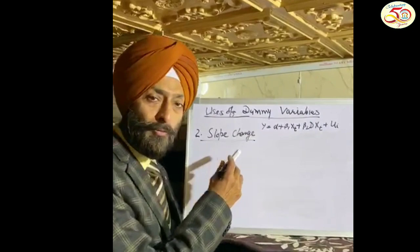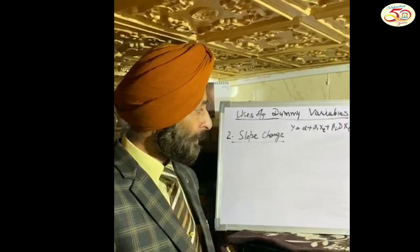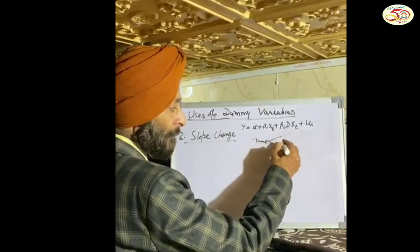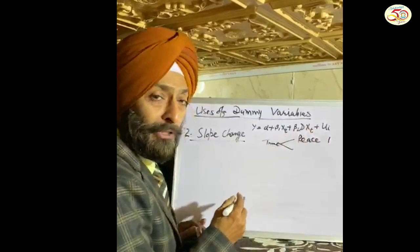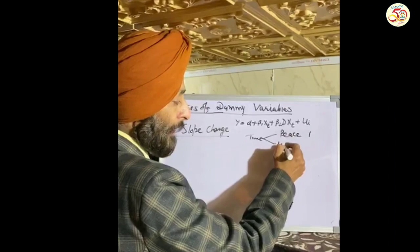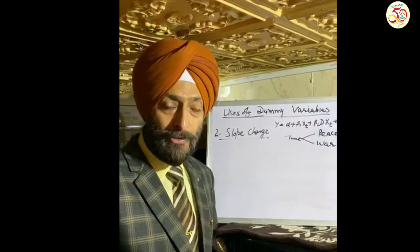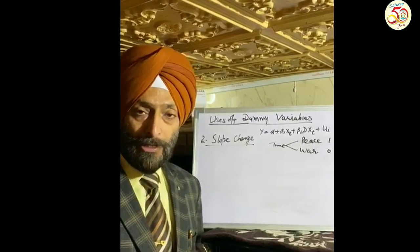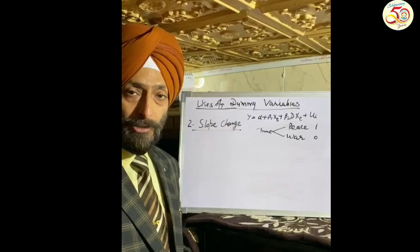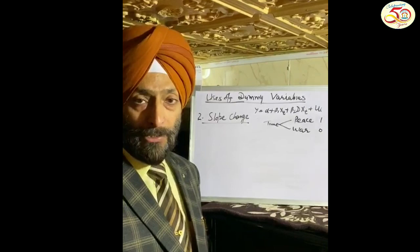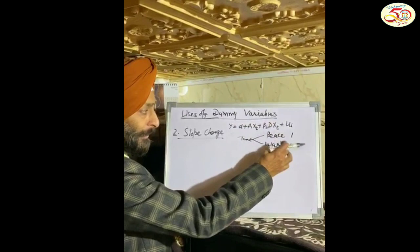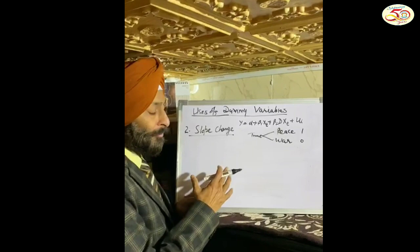Another use of dummy variable is to present a change in slope of the function. Let us say that time is the dummy variable. Time can be peace time, and we assign value 1 in case of peace time. Time can also be disturbance or war time, and we allot it value 0. For example, these days throughout all countries we are facing the problem of coronavirus, COVID-19, which is a war-like situation. So this is not a normal time, and we allot value 0. If the dummy variable is allotted 0, the slope will be different than when it is allotted value 1 for peace time.